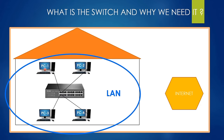But how exactly does this communication happen from a switch perspective? Let's say PC one must communicate with PC four. It will send a packet to PC four. This packet will go to a port of the switch first, then that port gives the packet to the hardware inside the switch. The switch looks inside the packet, learns its destination, then gives the packet to the port connected to PC four, and finally sends the packet to PC four.